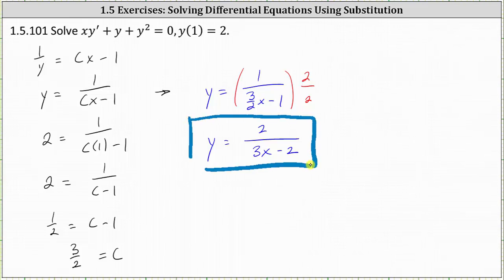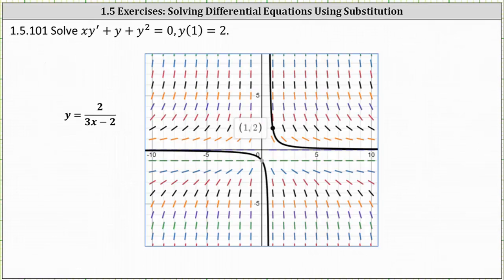Before we go, let's take a look at this graphically. Here we have the graph of the particular solution. The initial condition (1, 2) is this point here. Notice how the graph does pass through the point (1, 2) and fits nicely in the slope field.